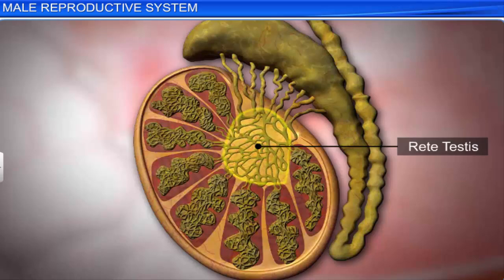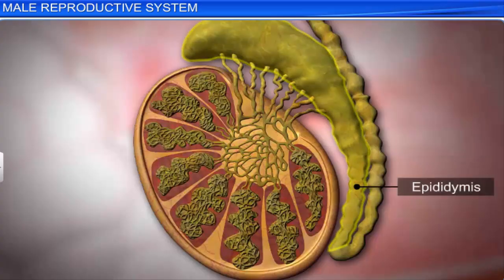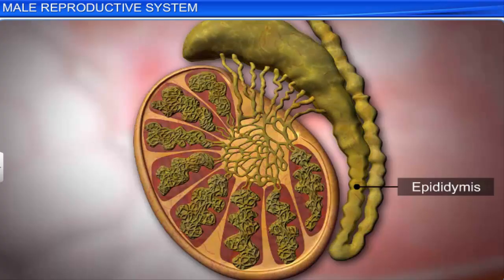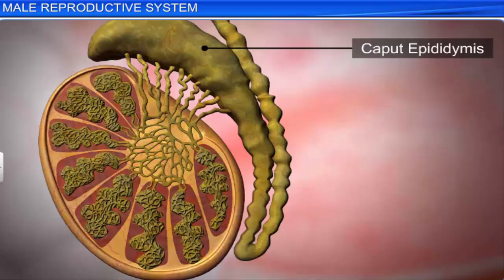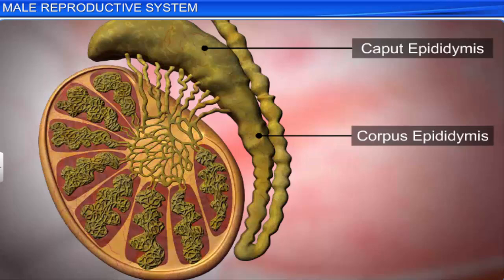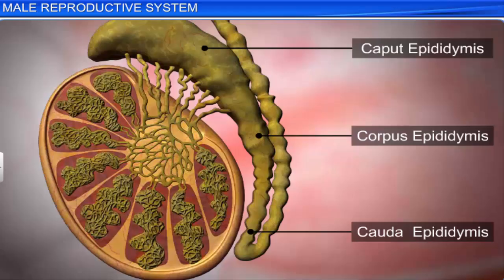The vasa efferentia collect sperms and transfer them to the epididymis. The epididymis is a long, narrow, highly coiled tubule present along the posterior surface of the testis. It is divided into three parts: anterior — caput epididymis; middle — corpus epididymis; and posterior — cauda epididymis. The epididymis stores the sperms temporarily and nourishes them.